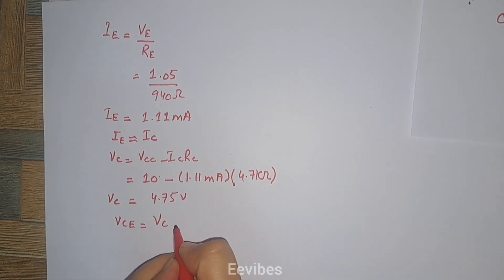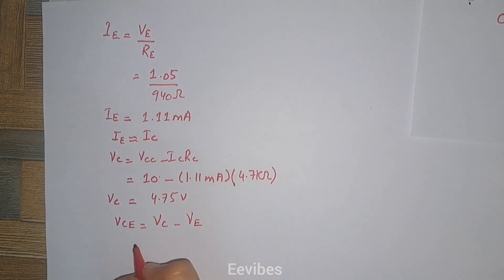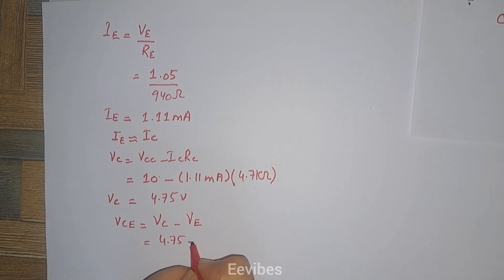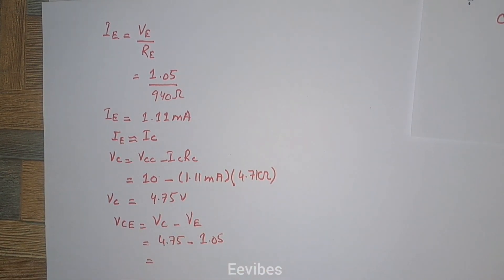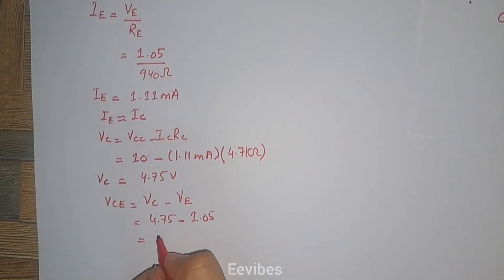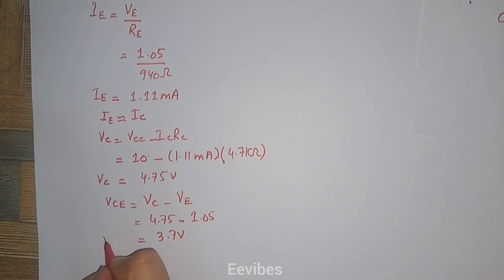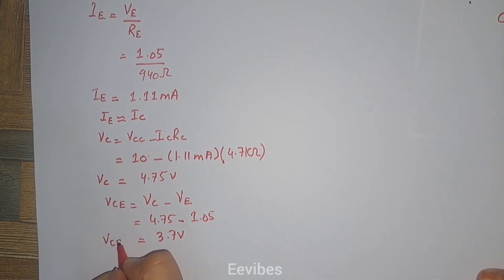The next step is to find VCE, which is the potential difference between the collector and emitter voltages. VCE equals VC minus VE, which is 4.75 minus 1.05, giving VCE equal to 3.7 volts.